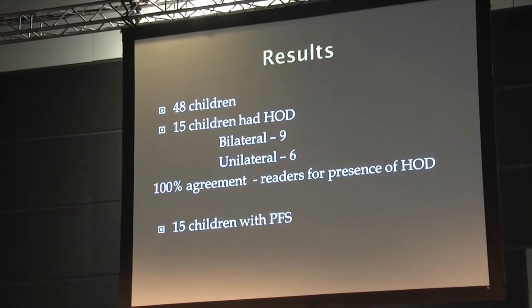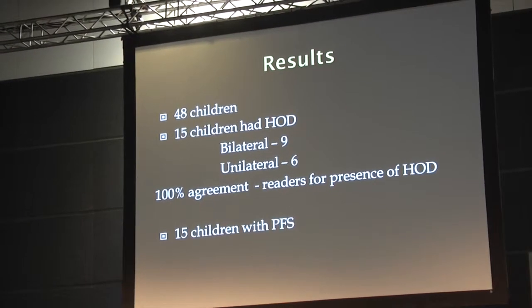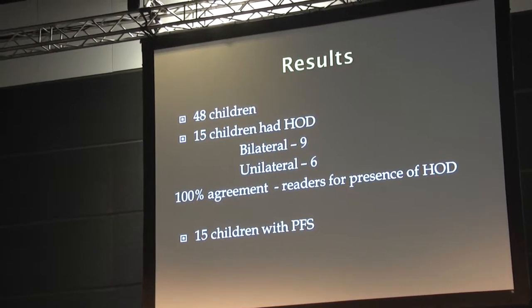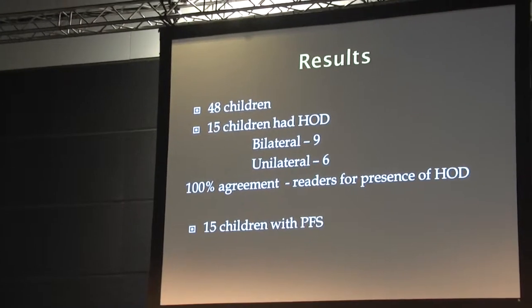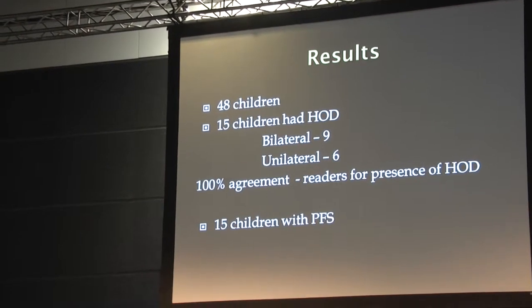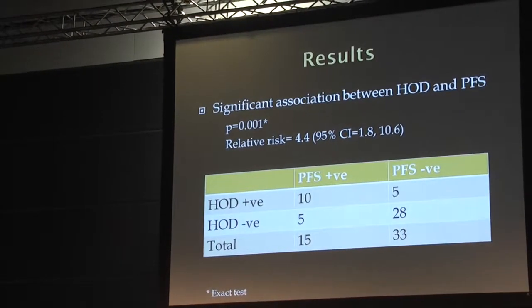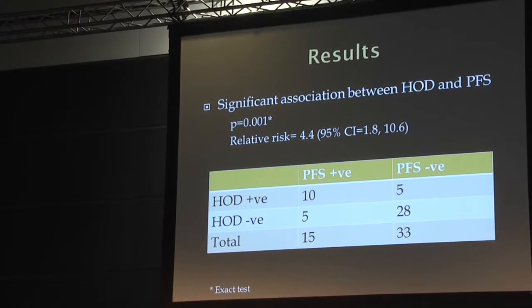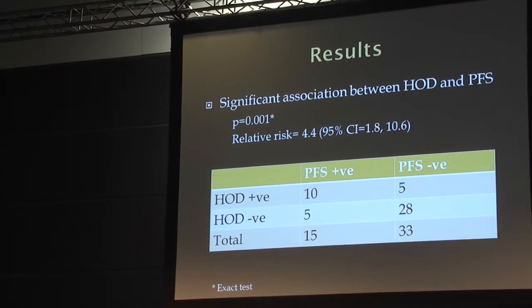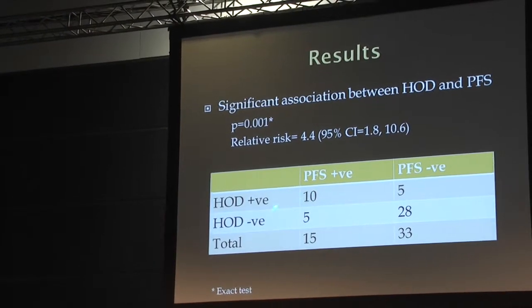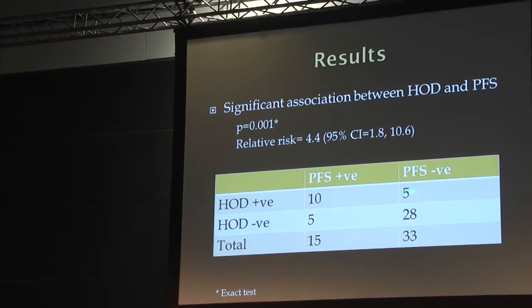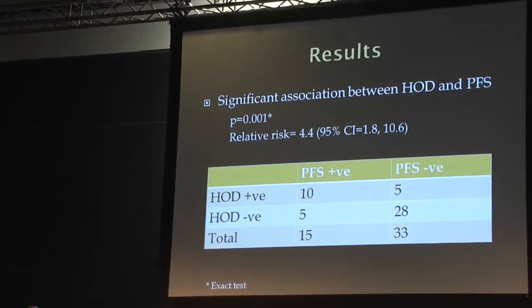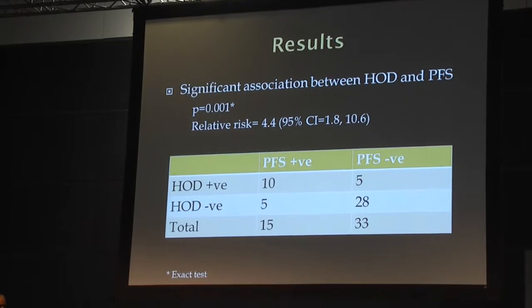The results: we had 48 children, and 15 had hypertrophic olivary degeneration — of which 9 were bilateral and 6 were unilateral. There was 100% agreement between the readers for the presence of hypertrophic olivary degeneration. Coincidentally, 15 children also had posterior fossa syndrome, though they were not all the same cases. There was a significant correlation between hypertrophic olivary degeneration and posterior fossa syndrome, though not 100% specific or sensitive. Of the 15 with olivary degeneration, 5 did not have posterior fossa syndrome; and of the 15 with posterior fossa syndrome, 5 did not have olivary degeneration. Still, there is a good association between both.